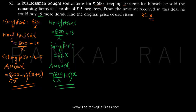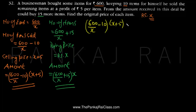Since these two amounts are actually the same, we equate them. So the equation is: (600/X - 10) multiplied by (X + 5) is equal to (600/X + 15) multiplied by X.